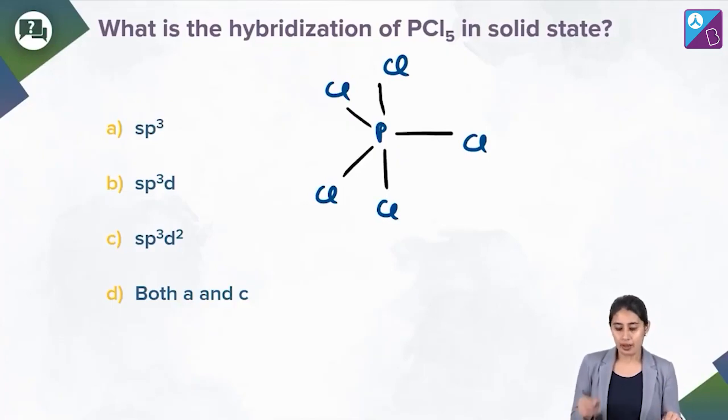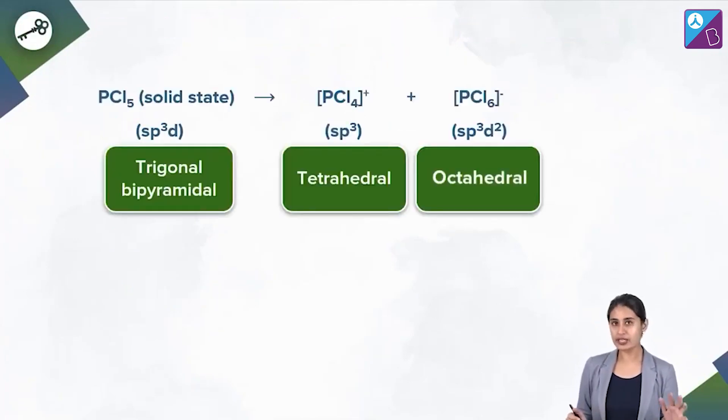But what about ionic state? So in ionic state, all that you need to know is that PCl5 exists as PCl4+ plus PCl6-. The examiner will never give you the data like this, that it is existing as PCl4+ plus PCl6-. So it's existing like a cation or an ion, ionic compound. Right, you can see there is a positively charged species and a negatively charged species.